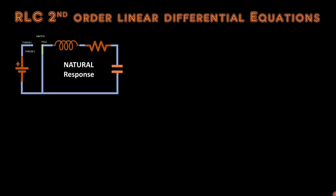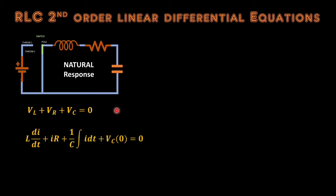Let's start with the natural response of our series RLC. In this case our input is disconnected. We will use KVL to obtain an equation, so we will have the summation of the inductor voltage, the resistor voltage, and the capacitor voltage equal to zero. We will replace all those voltages across elements in terms of current: for the inductor it is L·(di/dt), for the resistor it is the current multiplied by the resistance, and for the capacitor it is (1/C)·∫i dt plus the initial capacitor voltage at time equal to zero.